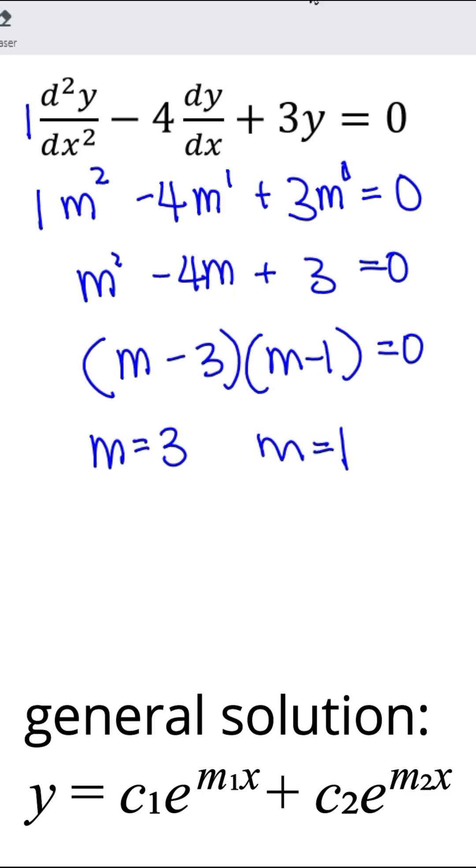If you have two distinct roots, the solution to this differential equation is y equal to c1 e to the power of 3x plus c2 e to the power of x.